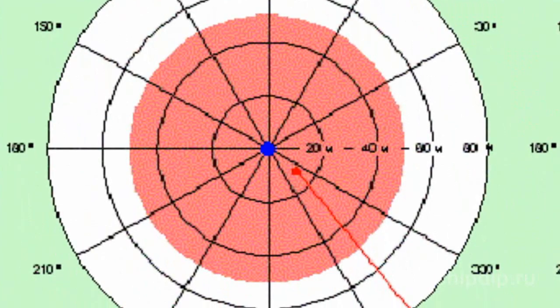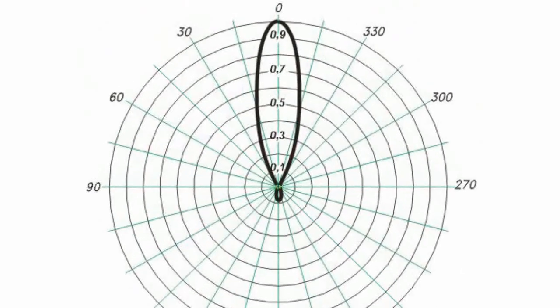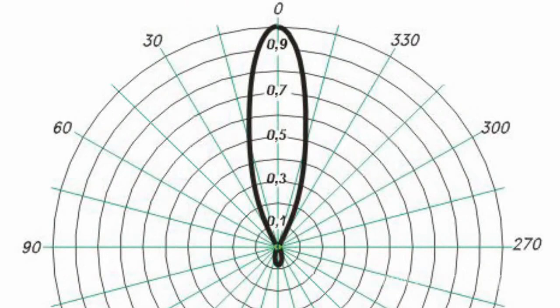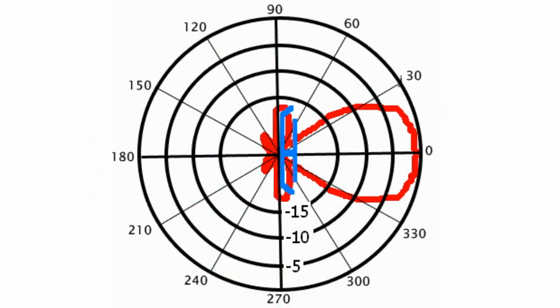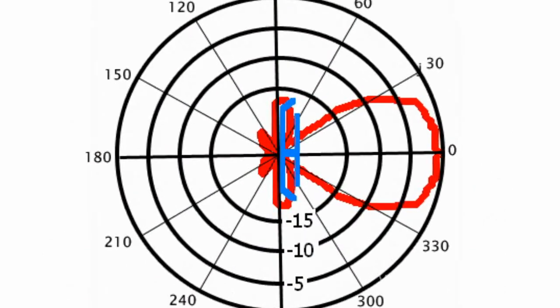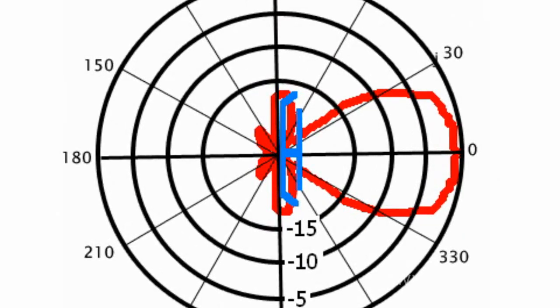At the same time, a directional diagram looks like a closed line in a polar system of coordinates. The system is built so that the distance between the antenna in the center of the diagram and any point on the directional diagram is in direct proportion to the energy radiated by the antenna in the particular direction.